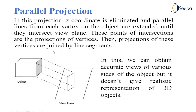The projections of these vertices are joined together with line segments. In this, we can get the accurate view of all the sides of the object. But it does not give a realistic representation of the 3D object because we are getting only one face of the object at a time on the view plane.